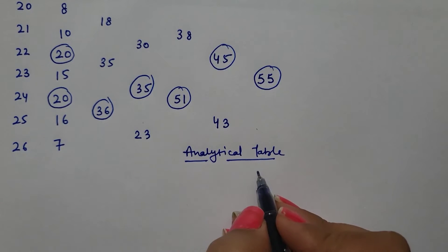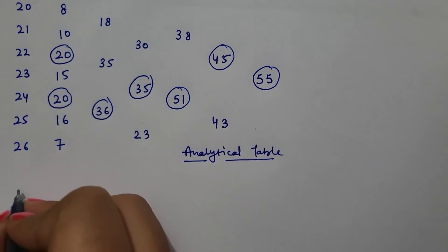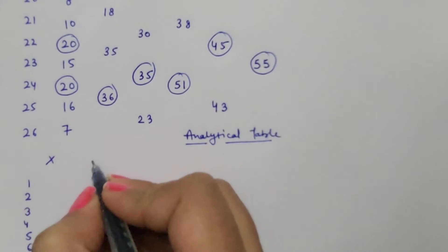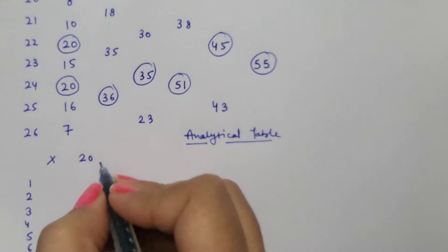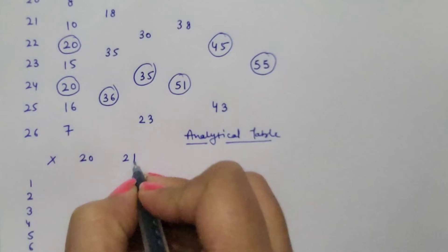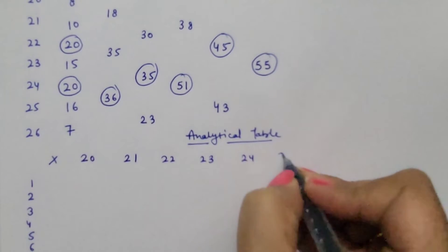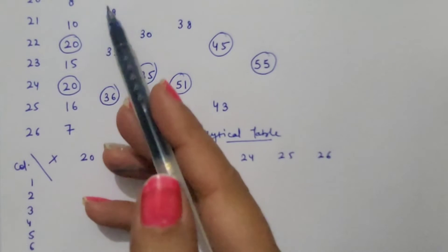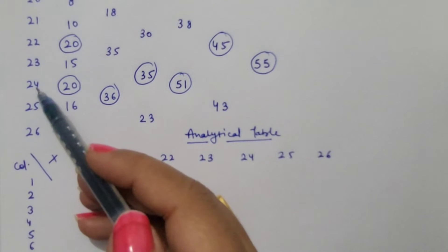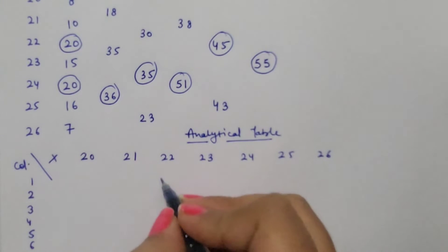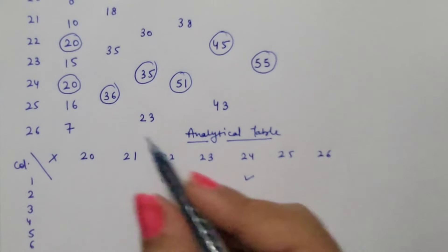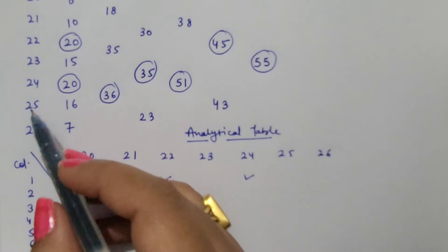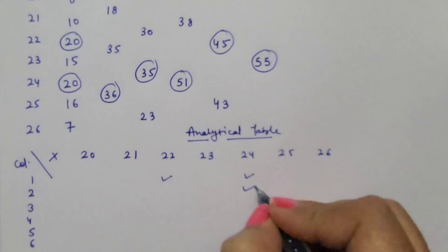Analytical table. For construction of analytical table, we will mention our columns, and here we are taking our observations: 20, 21, 22, 23, 24, 25, and 26. Now, what we need to do is, highest frequency in first column is 20, correspond to 22 and 24. So, first column के आगे, 22 और 24 के आगे, tick कर दीजे. Second में, 36 is the highest frequency, which is 20 and 16. So, 24 and 25, tick these two items.